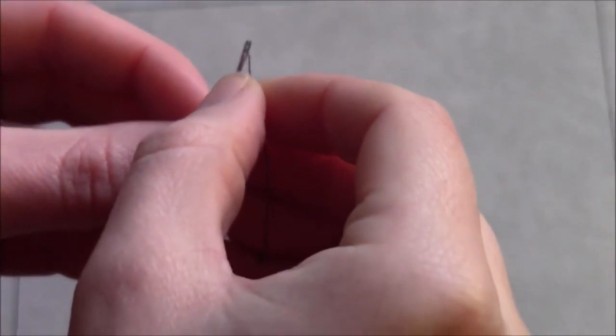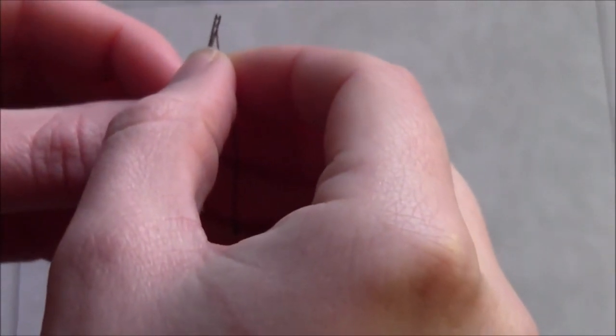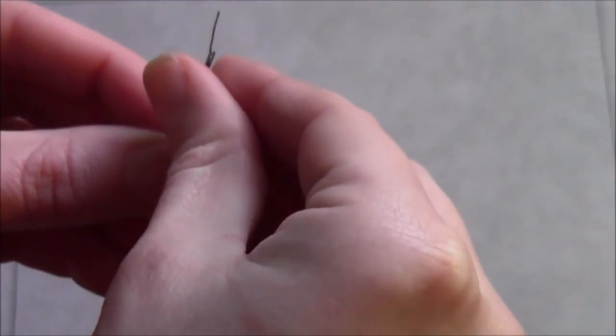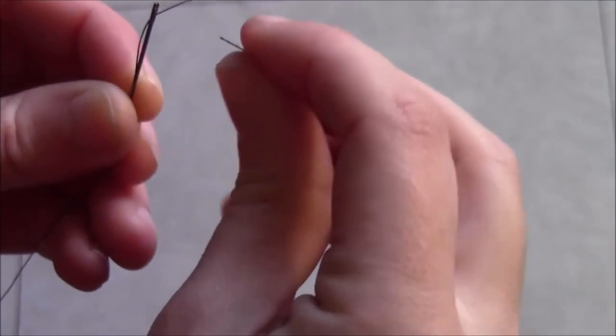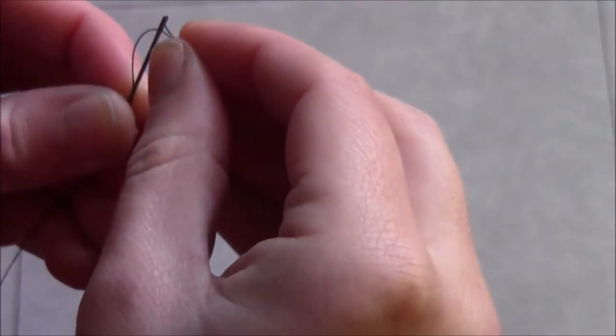To thread a double-eyed needle, you just push the thread through the bottom hole, pull it through a little ways, and then push it back through the top hole.